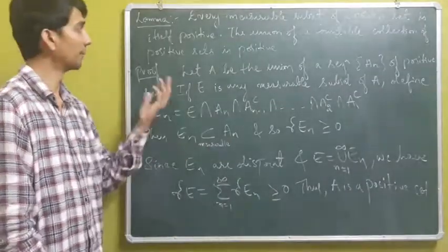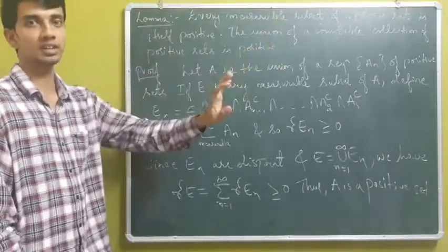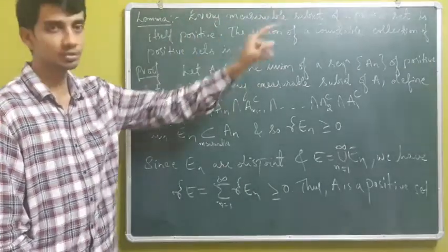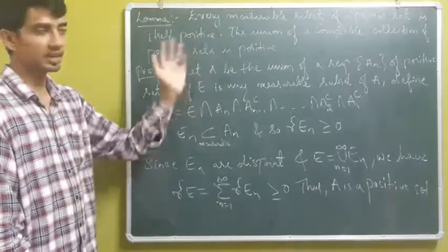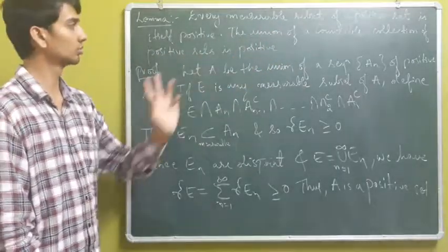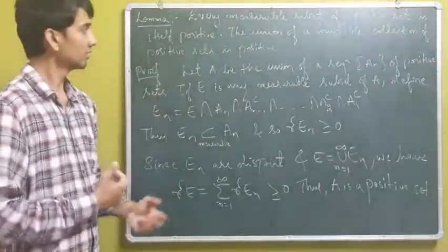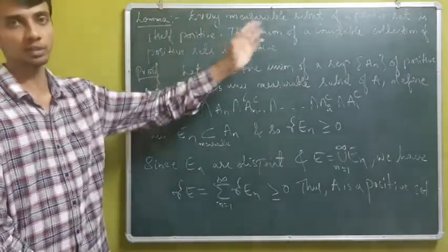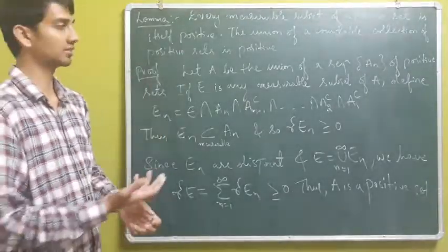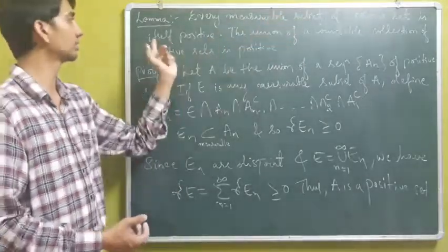We have a lemma with two statements. First, every measurable subset of a positive set is itself positive. Second, the union of a countable collection of positive sets is positive. The first statement is trivially true, so we proceed to prove the second.